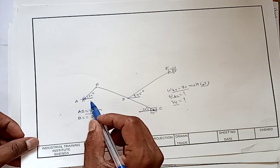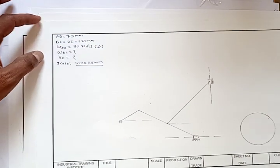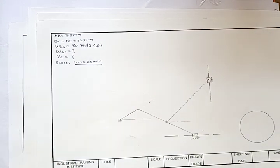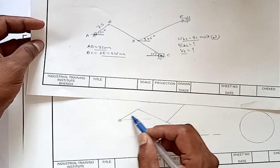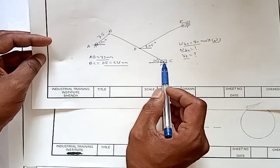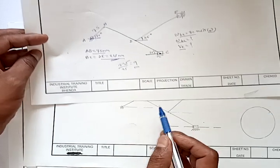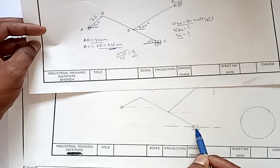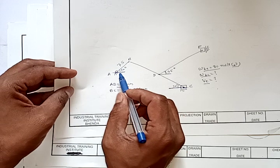Now we will construct the configuration diagram using some scale. Comparing the paper size and the dimensions of the mechanism, I will use the scale of 1 cm equals to 25 mm. So I have drawn this line of 3 cm at 30 degrees to the horizontal. Then BC is 225 mm, so 225 divided by scale factor of 25 gives 9 cm. I have drawn line BC of 9 cm at an angle of 120 degrees at B.